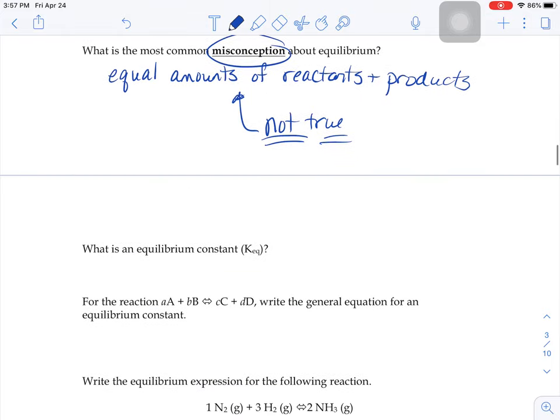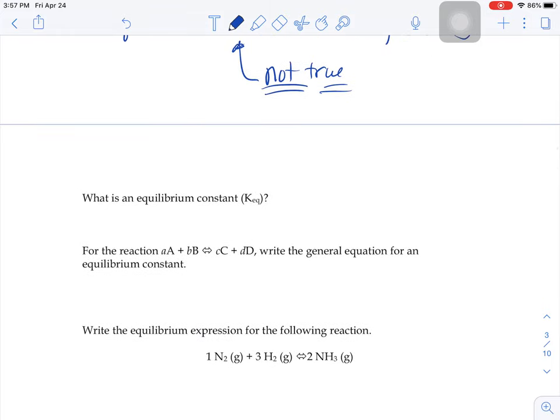So there's a way that you can mathematically calculate that equilibrium to show if, when you're at equilibrium, is it mostly reactants or is it mostly products? And you can calculate this thing called an equilibrium constant, a KEQ.